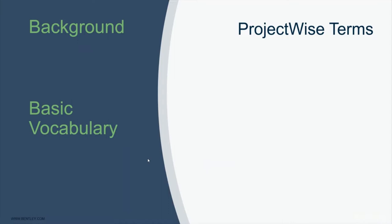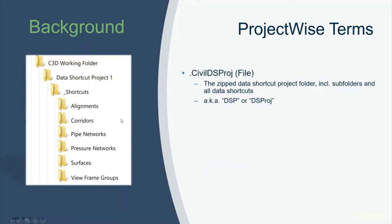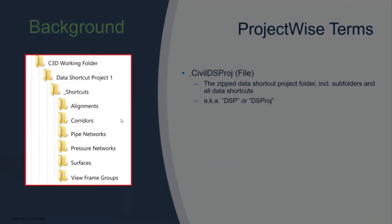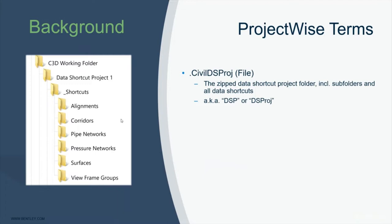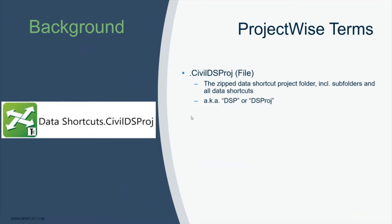Three terms that may be new to you: first, the civil-ds-proj file. You're used to the underscore shortcuts folder structure, but in ProjectWise, everything from shortcuts on down — all the XML files — lives as one single object. This is the cornerstone of the entire integration, because it can be treated as one document rather than hundreds of individual files and folders.